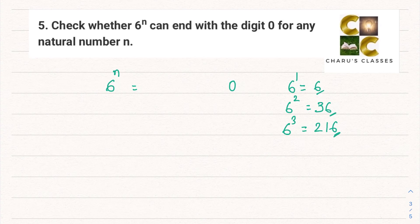We know that 6^n can be written as—6's factors are 2 and 3. So this becomes (2 × 3)^n.